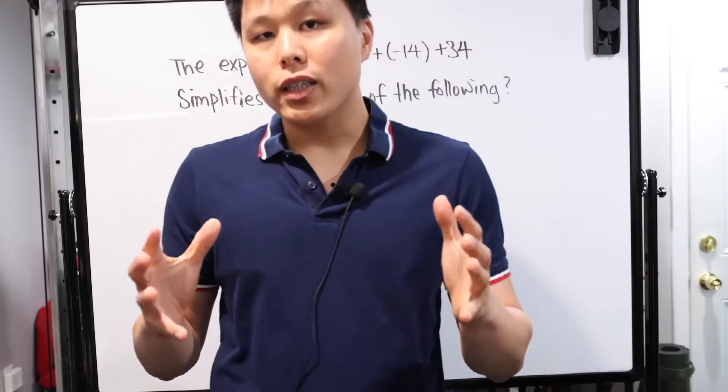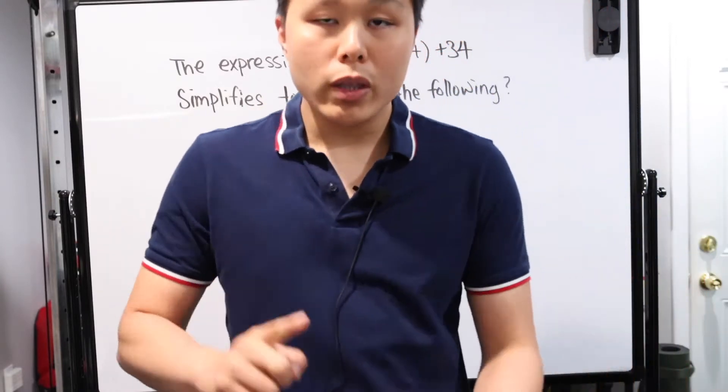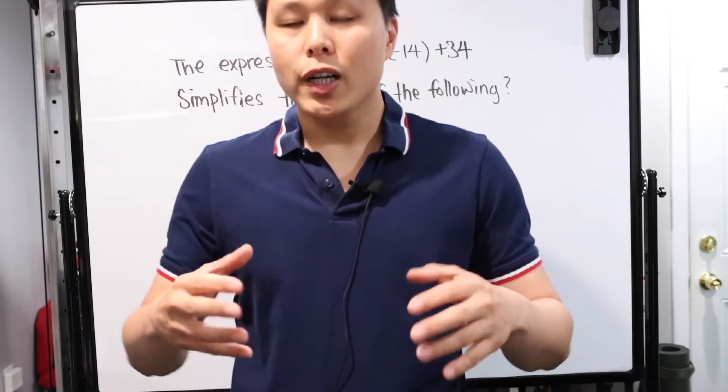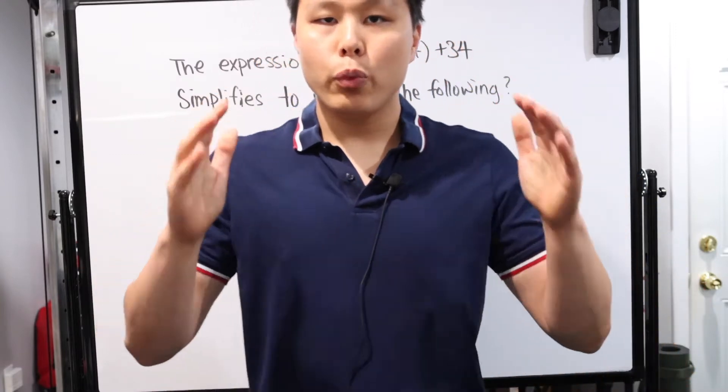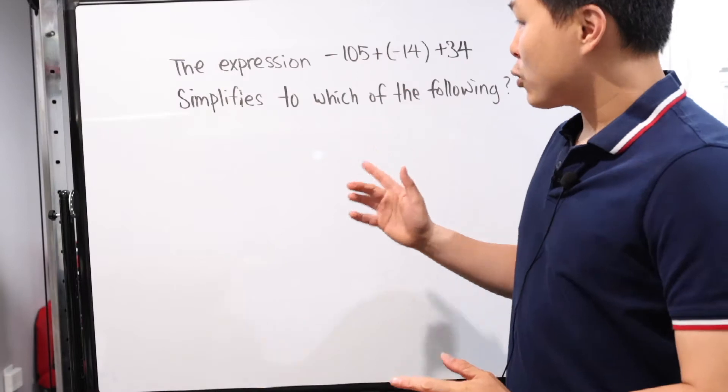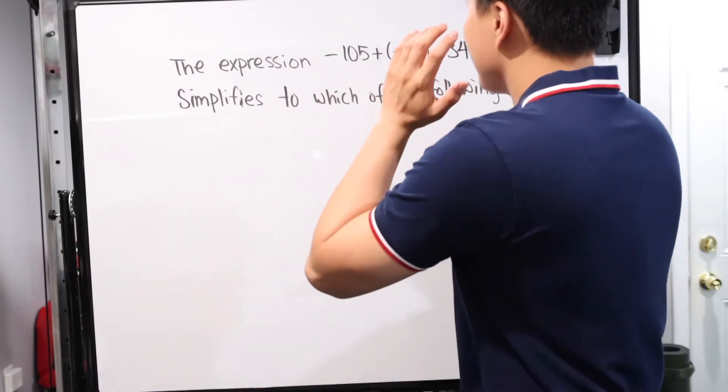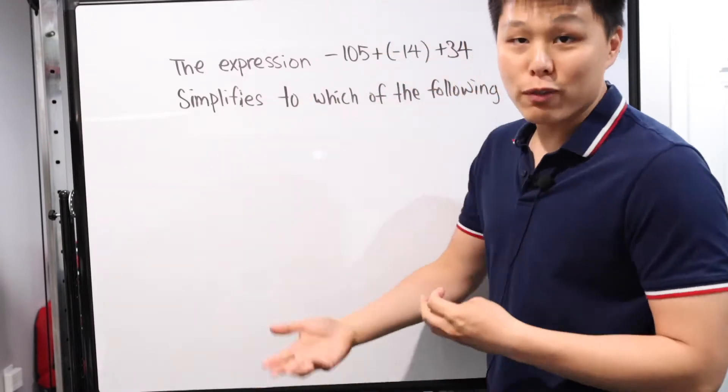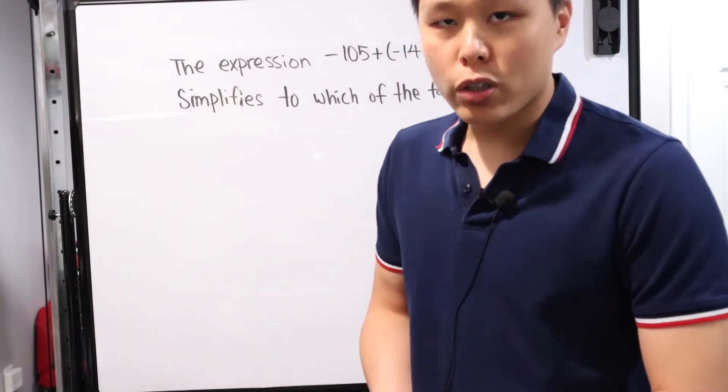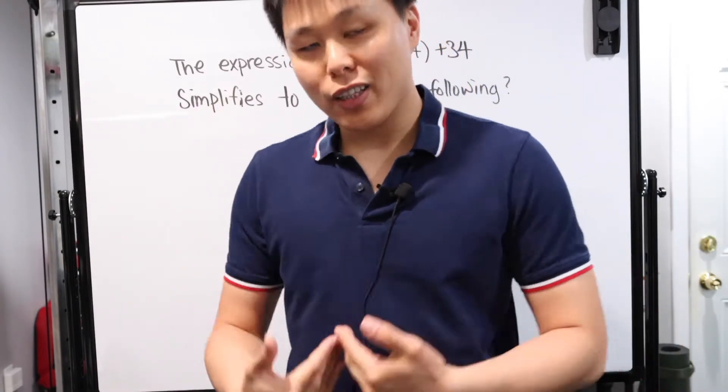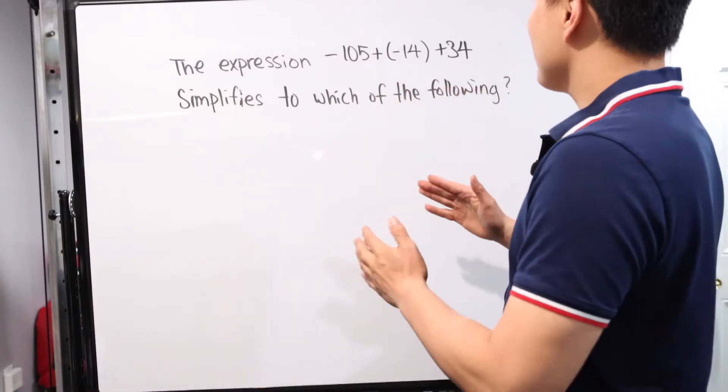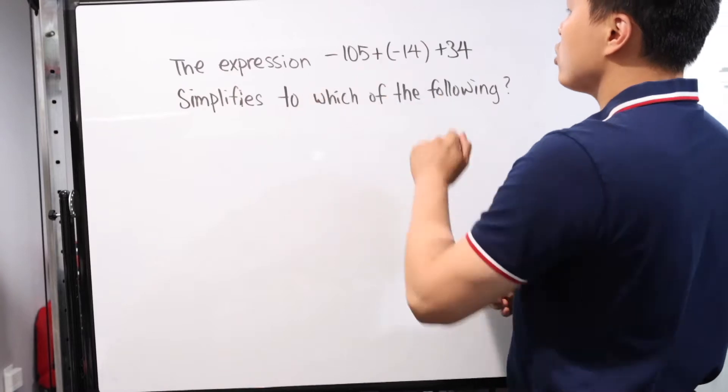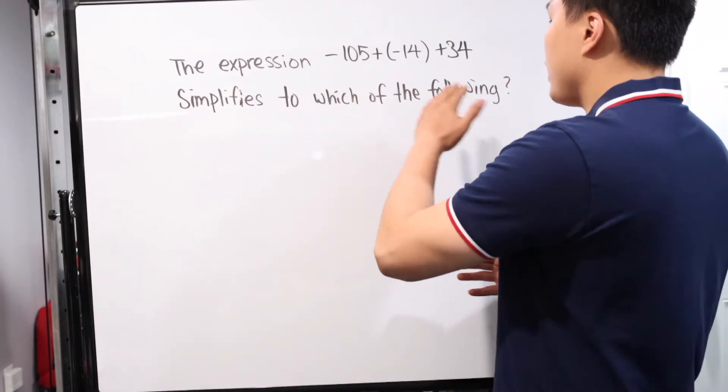Let's look at the first question. Here is the first question. As you can see, it is very shortly worded, which is by far my favorite. Here's our first problem. Very simple, very short. The expression negative 105 plus negative 14 plus 34 simplifies to which of the following.